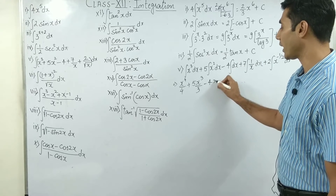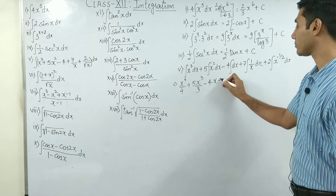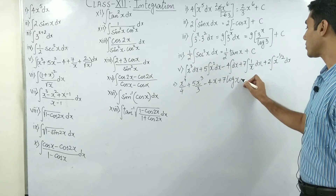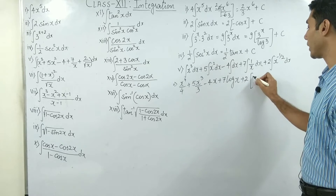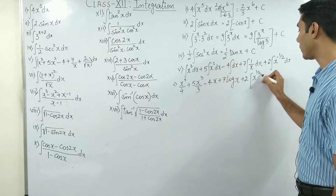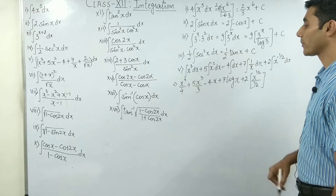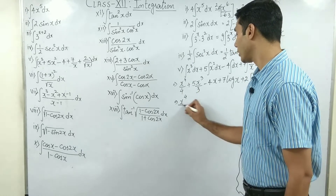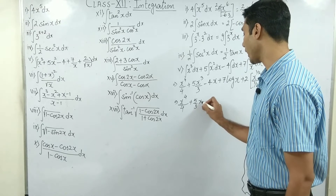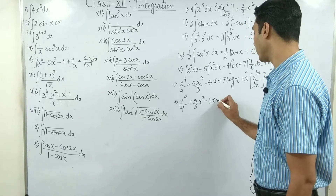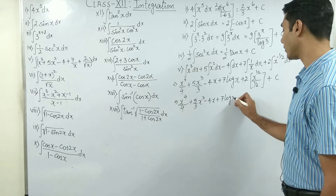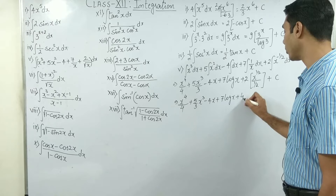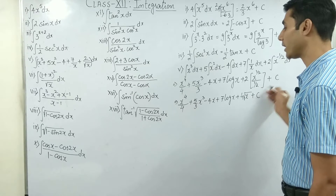Applying the power rule throughout: the final answer is x to the power 4 upon 4, plus 5/3 x cubed, minus 4x, plus 7 log x, plus 4√x plus c. Note that you only need one constant c at the end for the entire expression, rather than separate constants for each term.